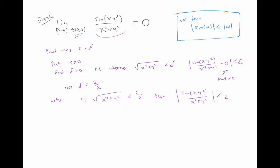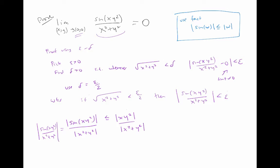So we want to show that if √(x²+y²) < ε/2, then the absolute value of sine(xy²)/(x²+y²) is less than epsilon. Using our key fact, we know the absolute value of sine(xy²) is less than |xy²|. So if we divide both sides by x²+y², we get the inequality we're looking for, which equals |x|·y²/(x²+y²). Now, y² is less than or equal to x²+y², so that ratio simplifies nicely.